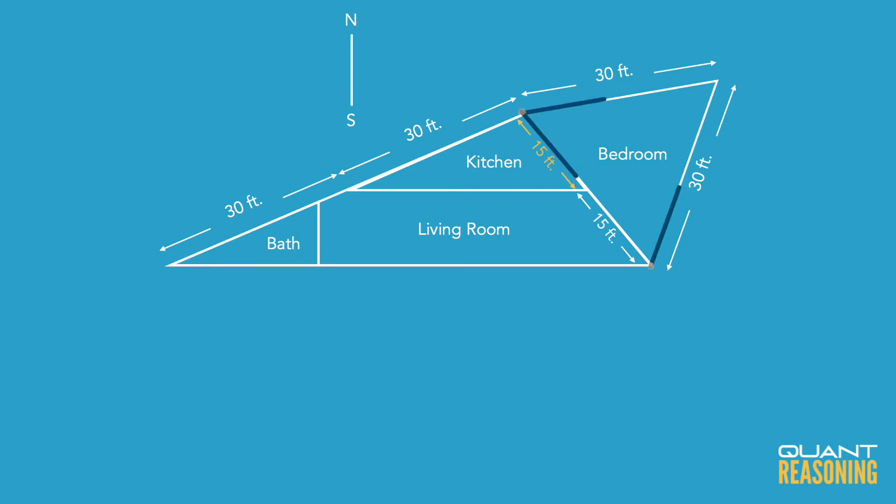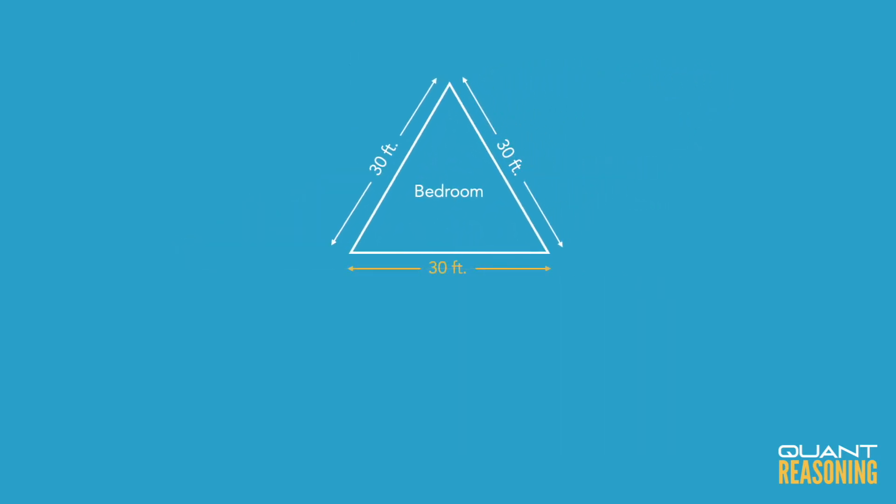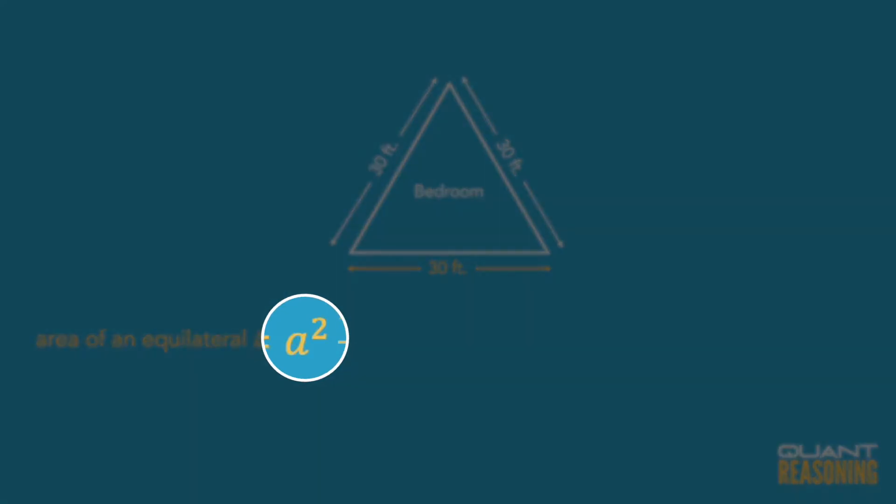The triangle that they're asking about is an equilateral triangle. There's one formula that I think is worth memorizing for the area of an equilateral triangle and that is that the area is equal to the side squared times square root of 3 divided by 4.